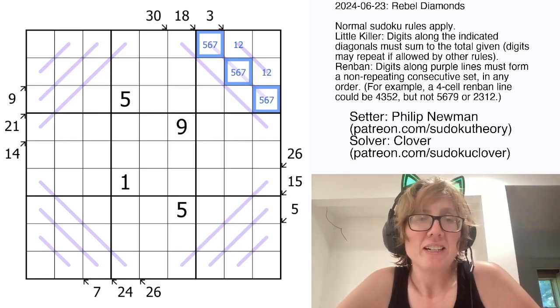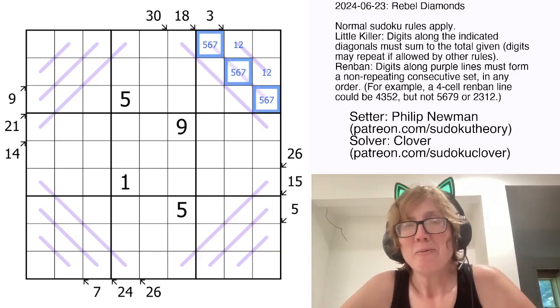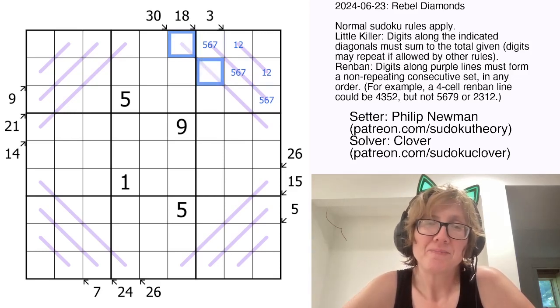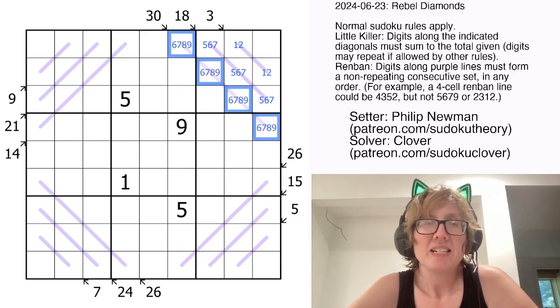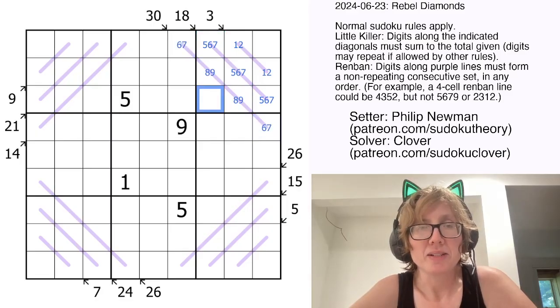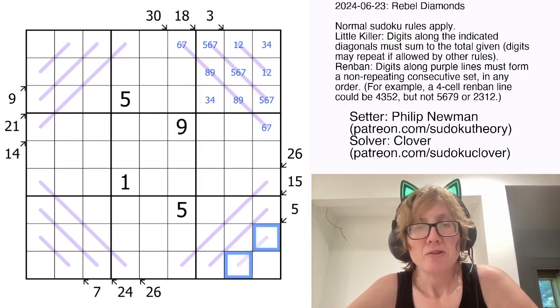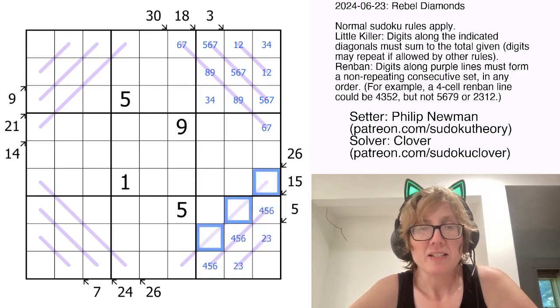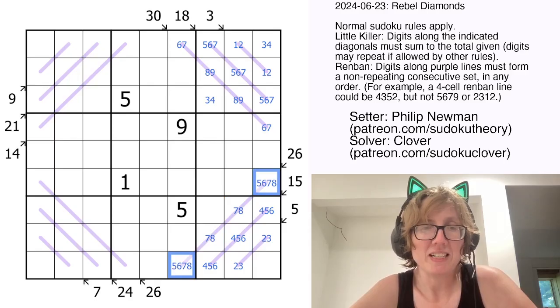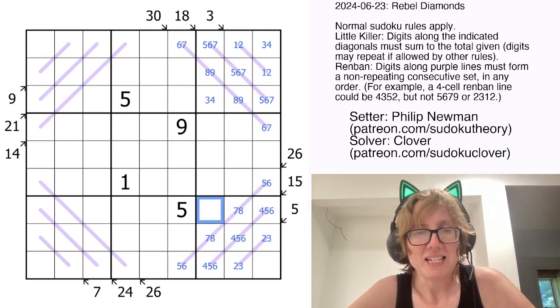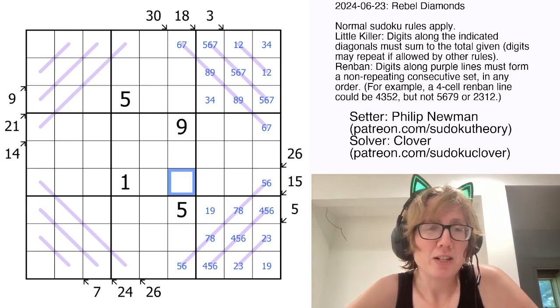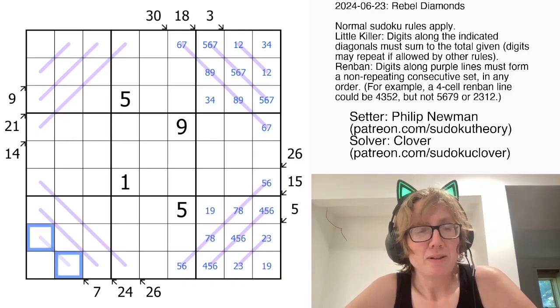I trial and errored it just by experimentation and said, well 4 plus 5 plus 6 is too small, that's only 15, so it must be 5 plus 6 plus 7. So however you get there, 30 is 6 7 8 and 9. So that makes this an 8 9 pair, and we can eliminate 8 9 from those cells. And then these are going to be a 3 4 pair. 5 is 2 plus 3. 15 is 4 plus 5 plus 6. 26 is 5 plus 6 plus 7 plus 8. You're not expected to just know these off the top of your head. I happen to have them in my head right now because I tested this fairly recently.